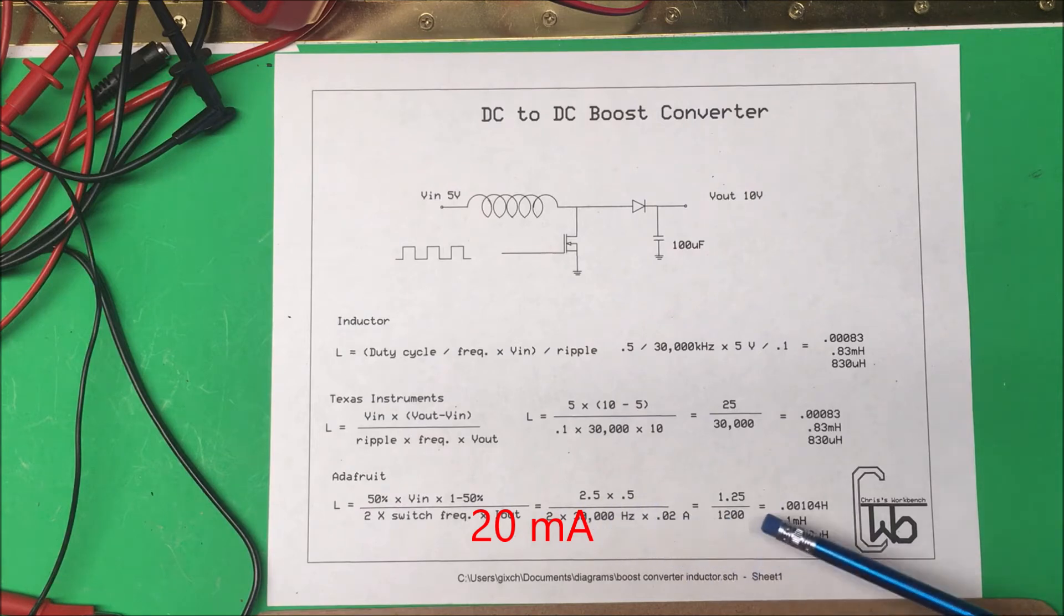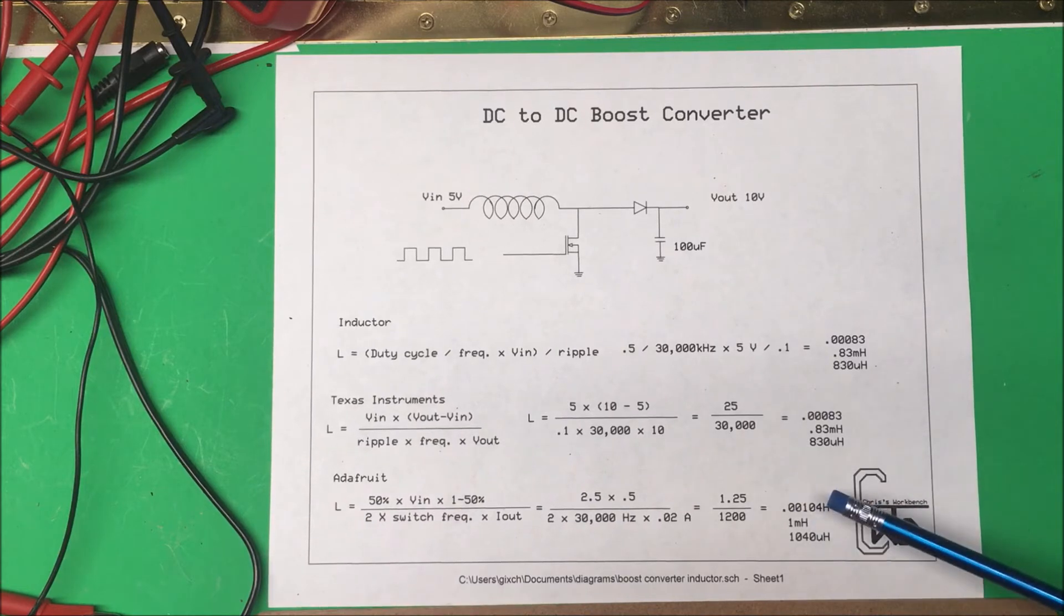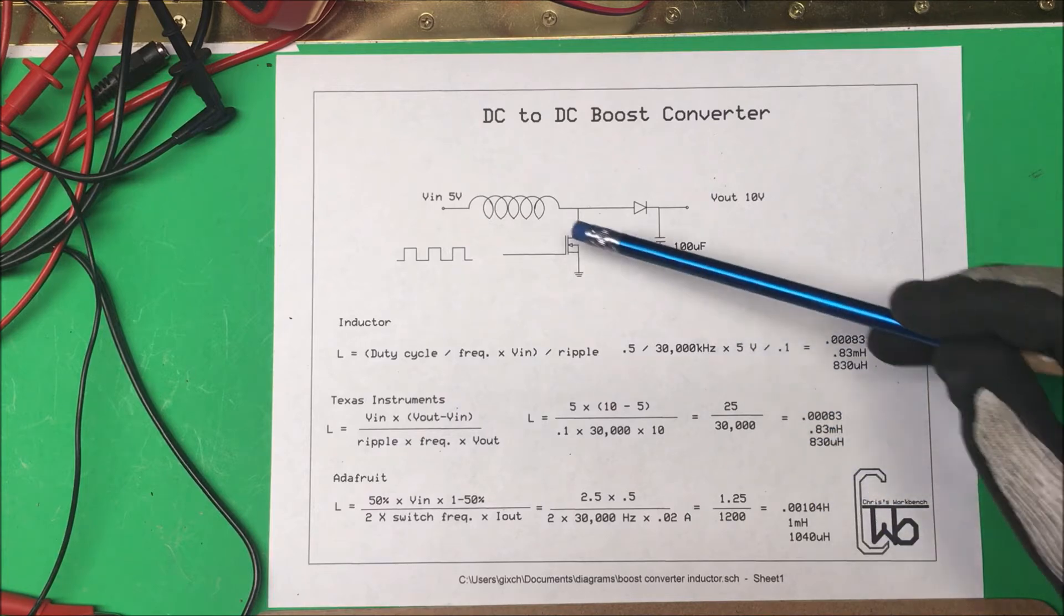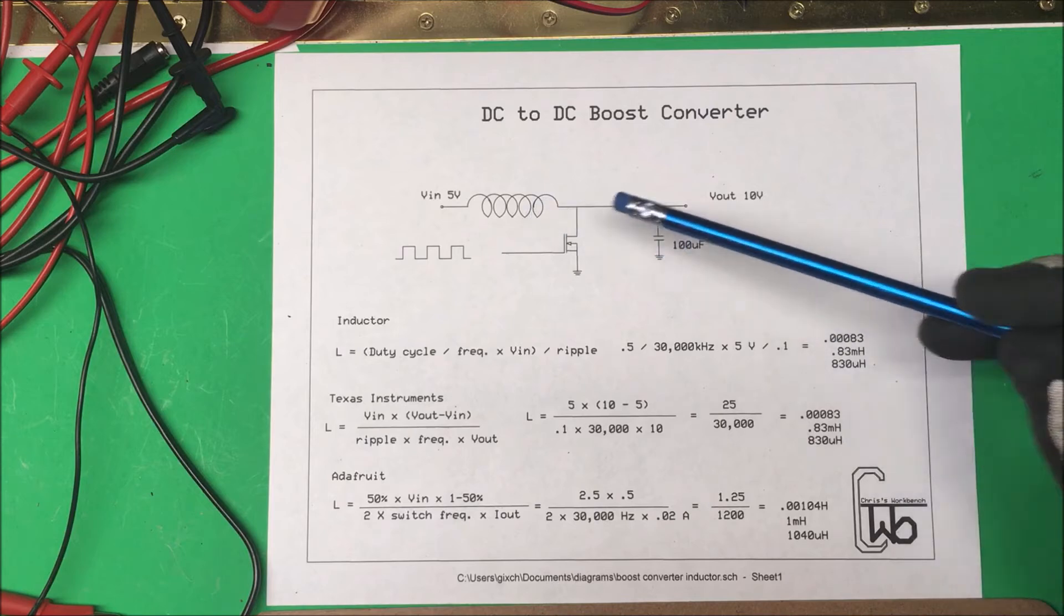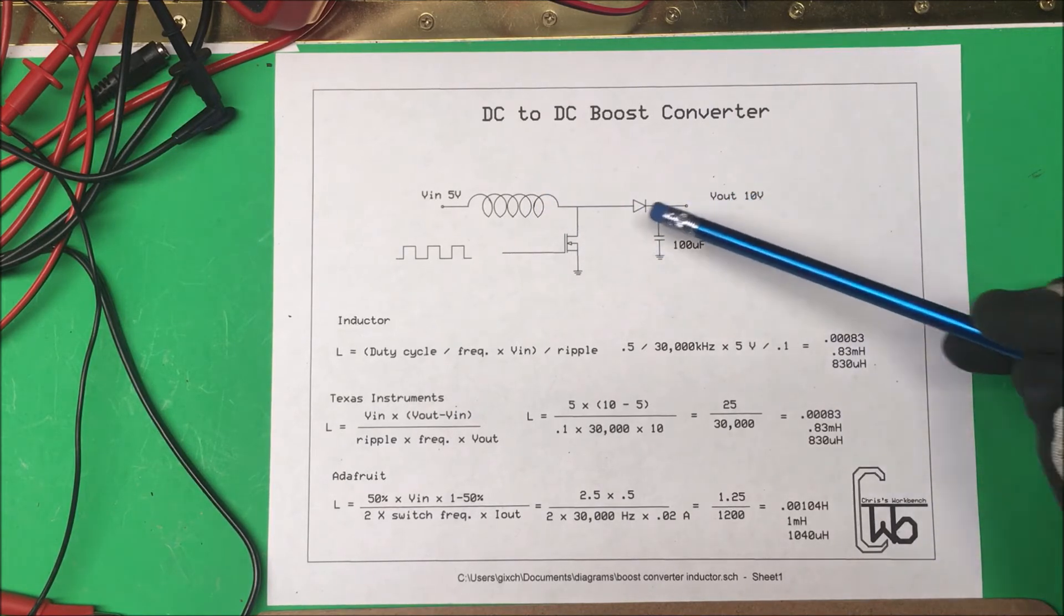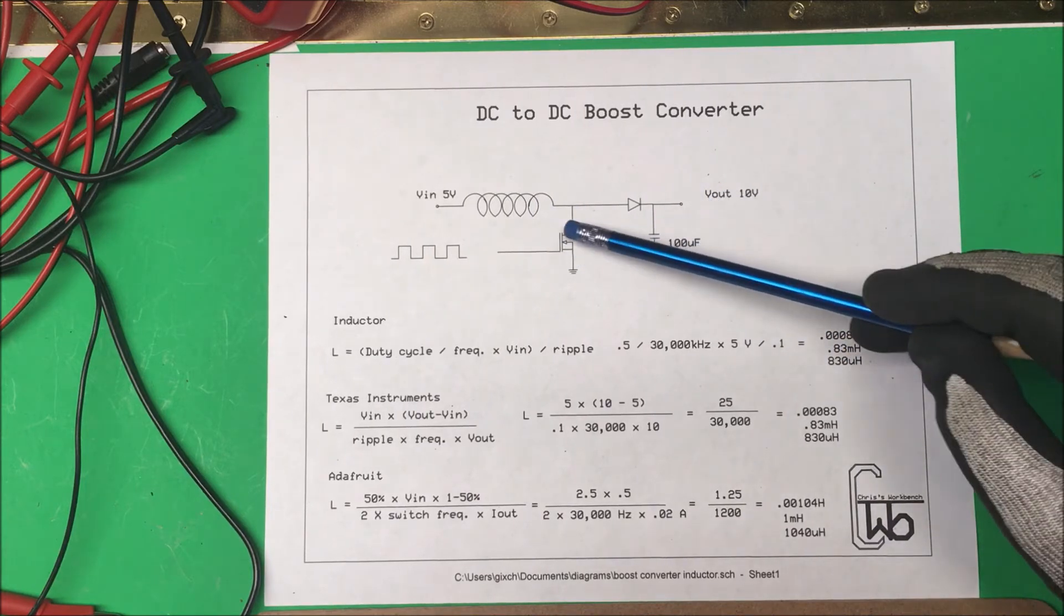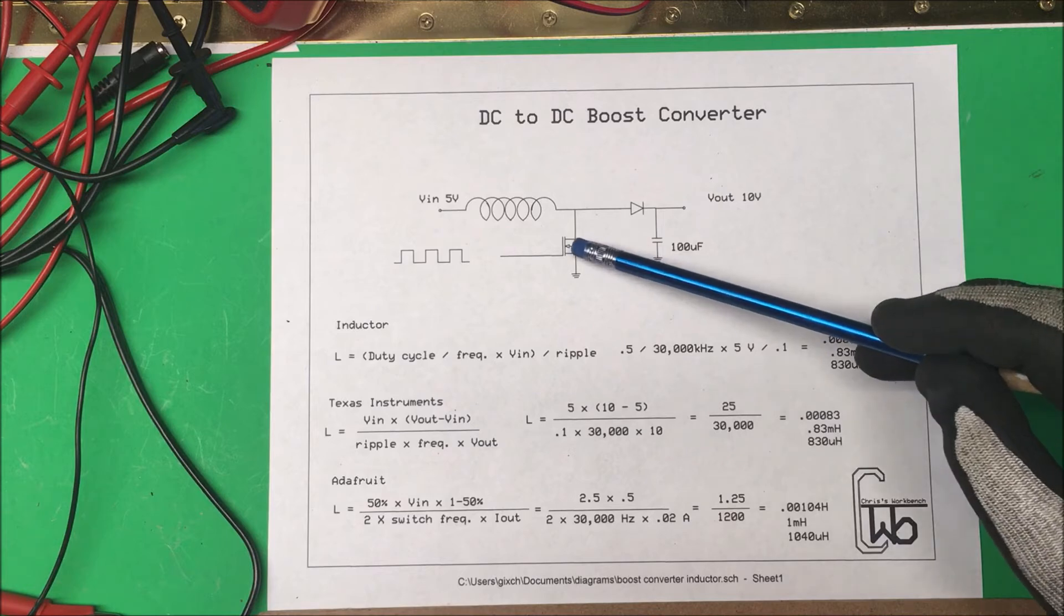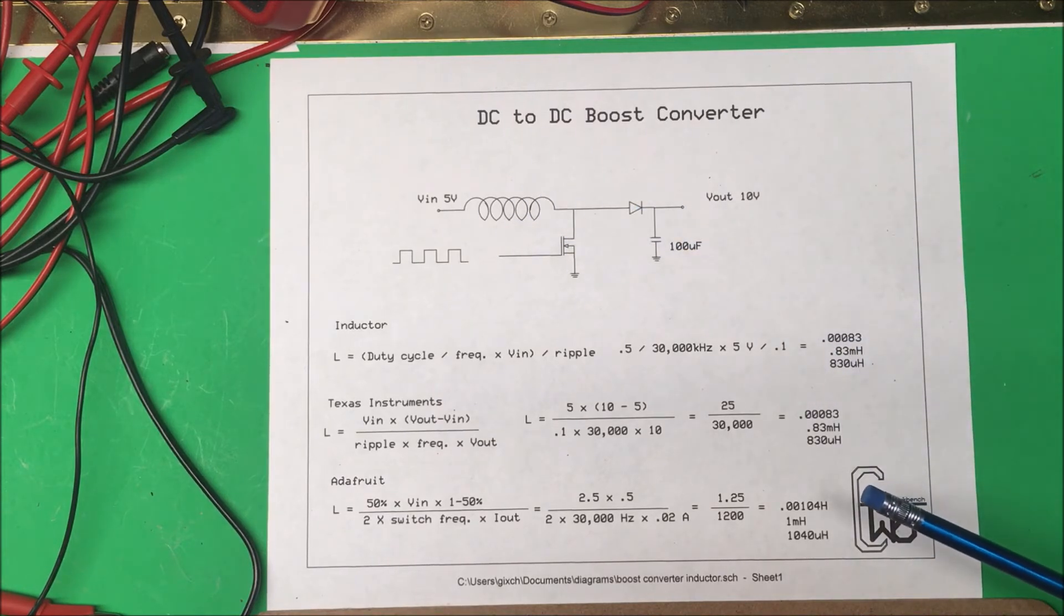I have a 1 millihenry inductor, which is 1000 microhenries, so I'm going to go with that 1 millihenry inductor. To get my 10 volts I may have to adjust the frequency. You can either adjust the frequency or you can adjust the coil, but adjusting the frequency is going to be easier for me.